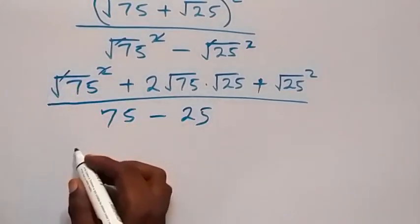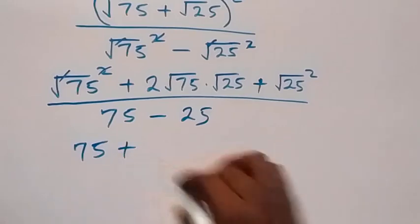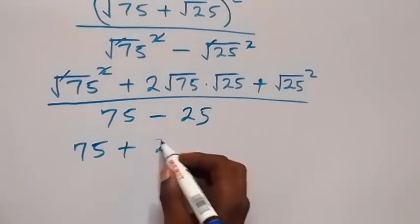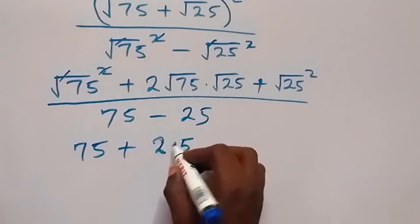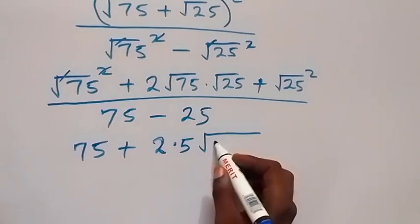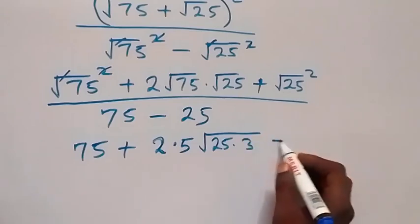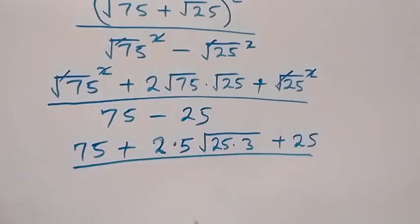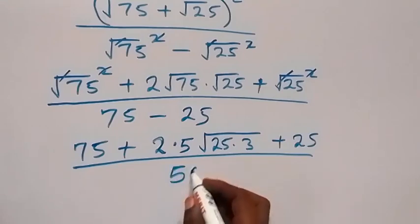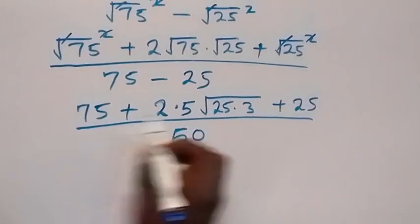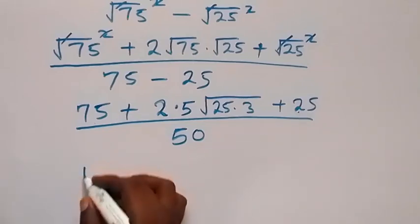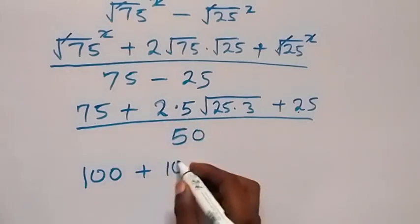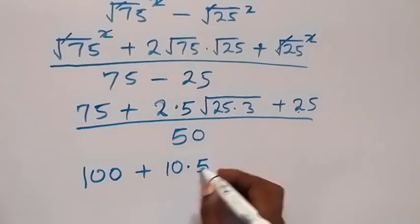Square cancels square root: root 75 squared gives 75, which we write as 25 times 3. Root 25 squared gives 25. The denominator 75 minus 25 gives 50. Adding 25 plus 25 gives 50, and 2 times root 75 times root 25 becomes 2 times 5 times root 3, that's 10 root 3.